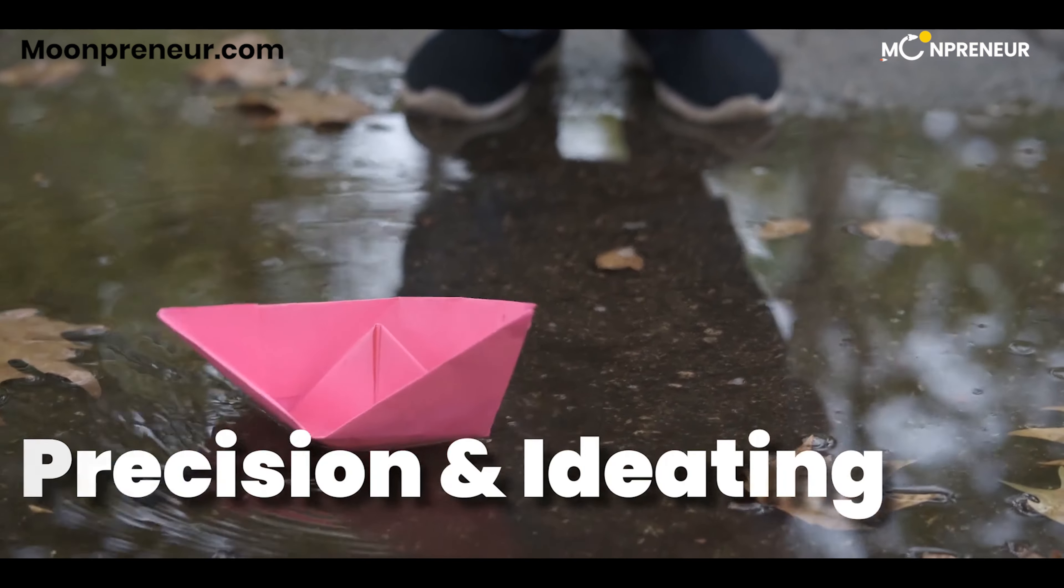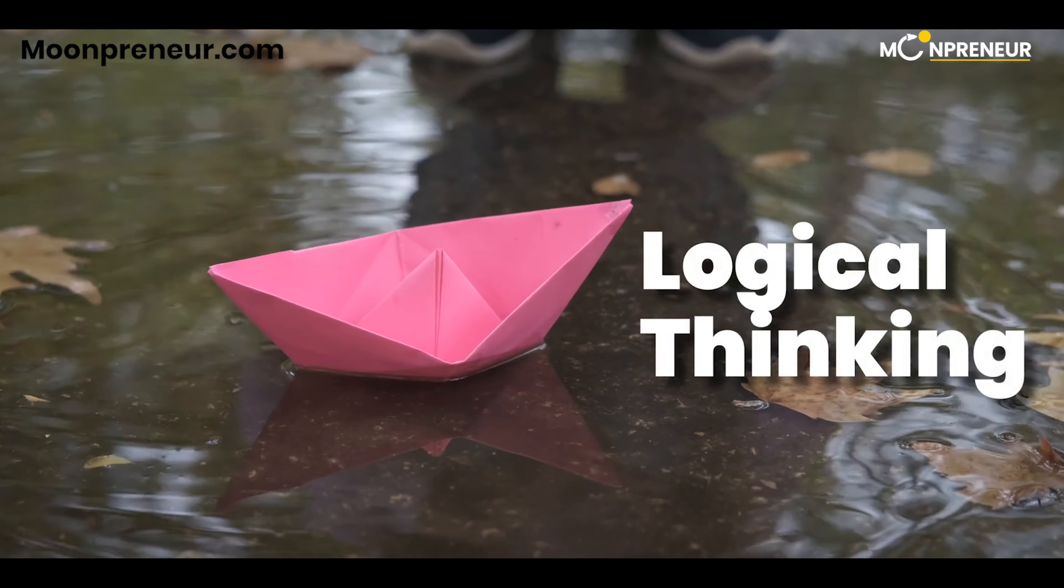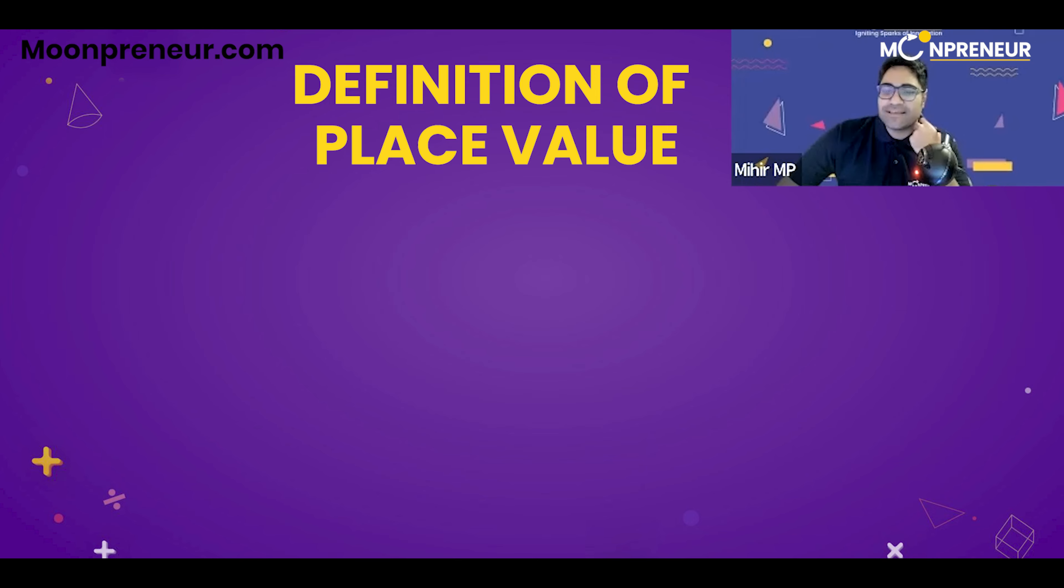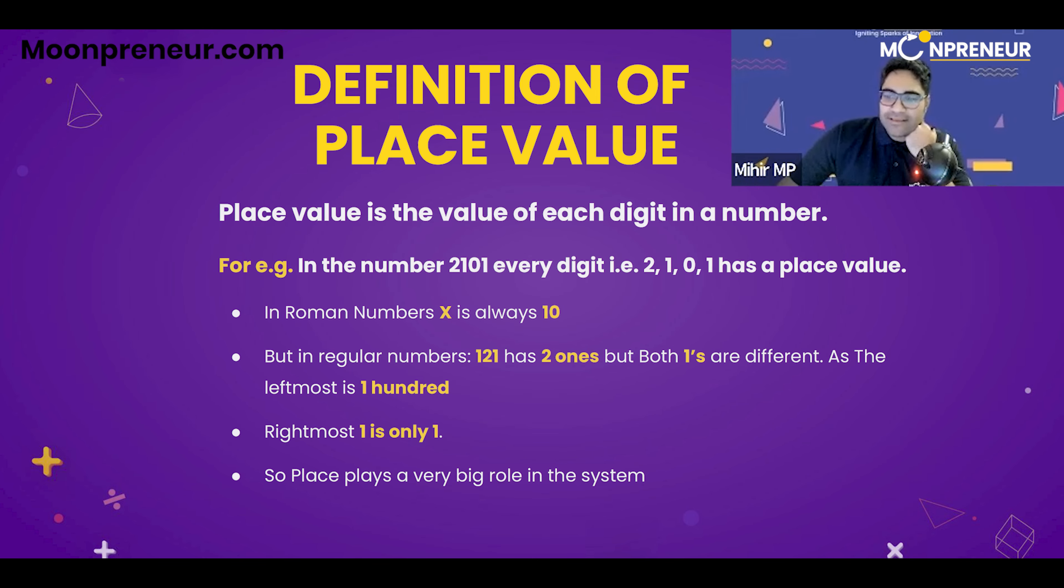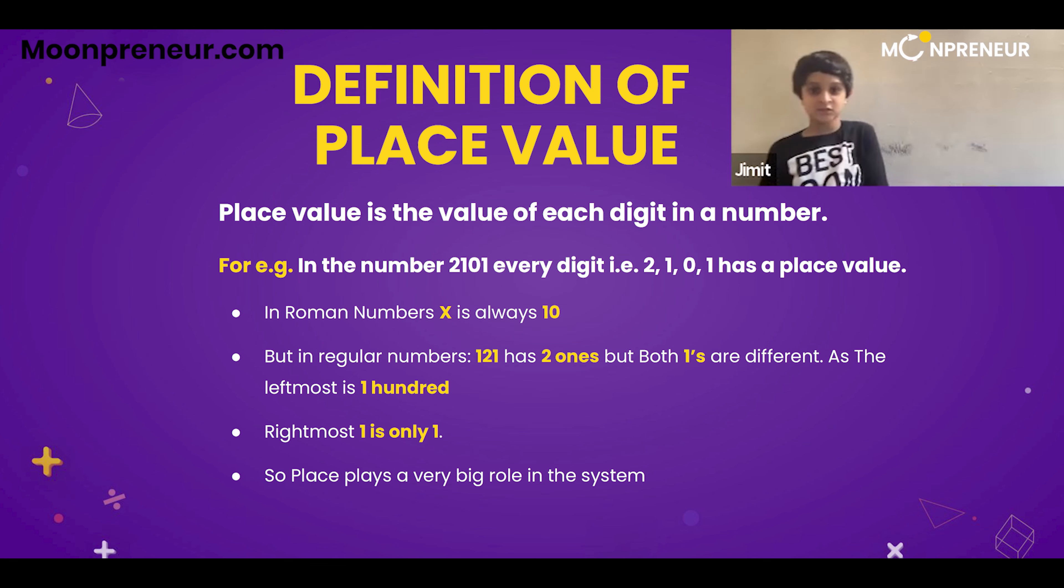To help kids develop logical thinking. Figure out place value. Now place value is basically the value of each digit in a number. Right, if I write a number which is 2101, each digit - the 2, the 1, the 0 and the 1 - has a place value. Have you studied place value in math? Yeah. Okay, that's good.